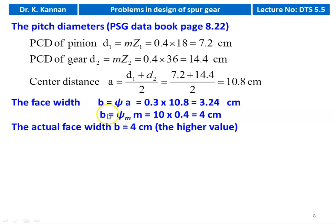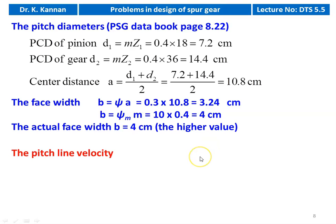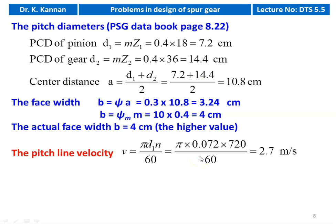For face width, we have two equations: B = ψ × A = 0.3 × 10.8 = 3.24 cm, and B = ψm × m = 10 × 0.4 = 4 cm. We take the higher value, so B = 4 cm. Pitch line velocity V = π × D1 × N / 60 = π × 0.072 × 720 / 60 = 2.7 m/s.